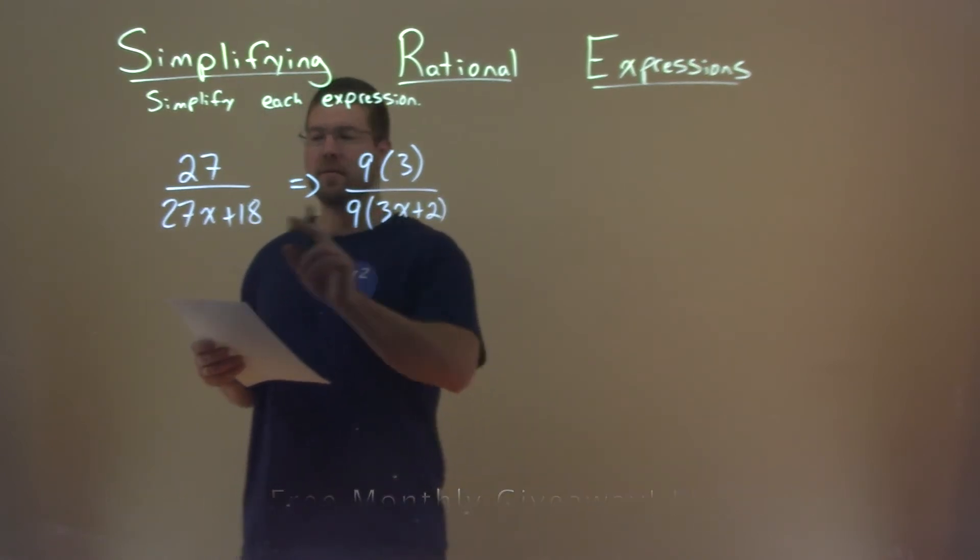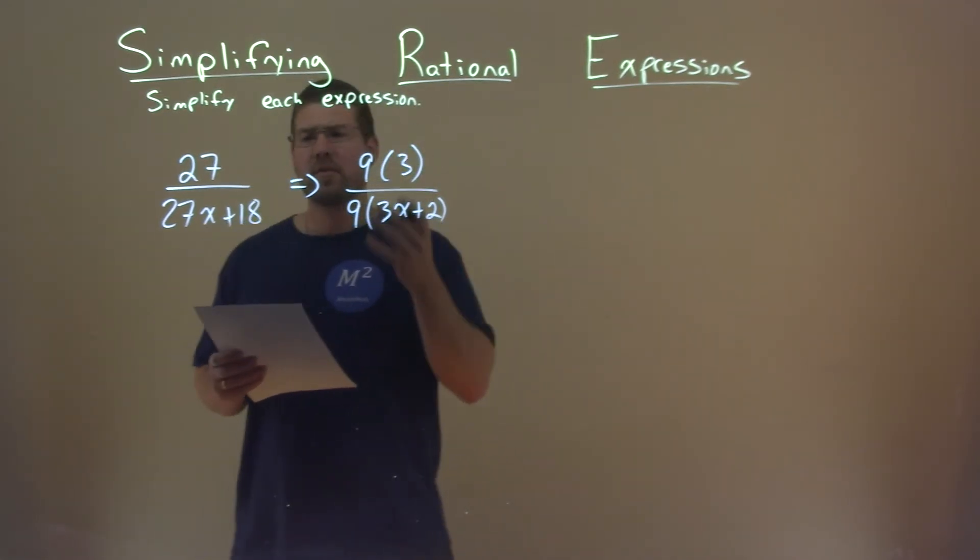3x plus 2. So notice 9 times 3x is 27x, 9 times 2 is 18. And of course, this was by design. The 9s cancel right here.